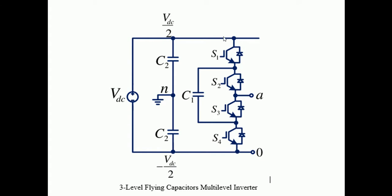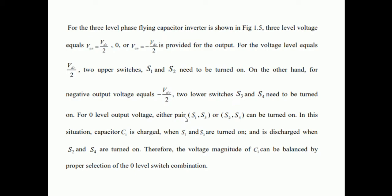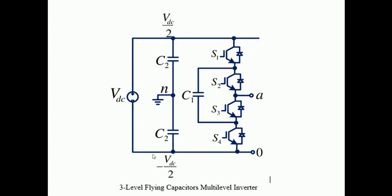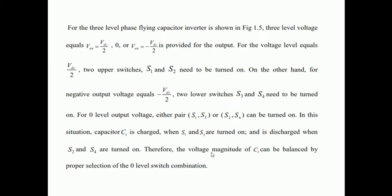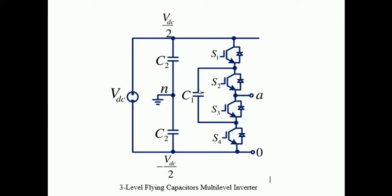When you turn on S1 and S3, you will charge capacitor C1. S1 and S3 charge C1, and it is discharged by S2 and S4. So when you turn on S2 and S4, this will discharge C1. Therefore, the voltage magnitude of C1 can be balanced by the proper selection of switching states. This is how a multilevel flying capacitor inverter operates.